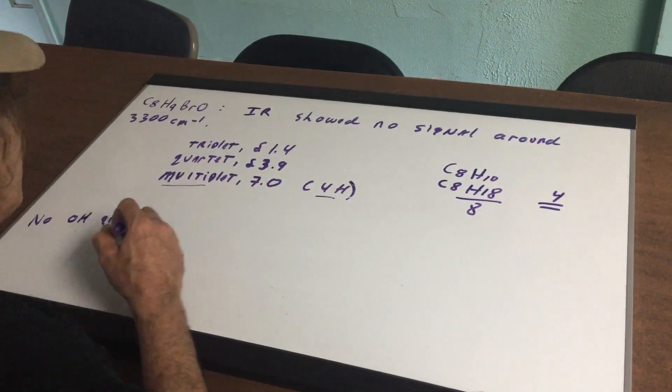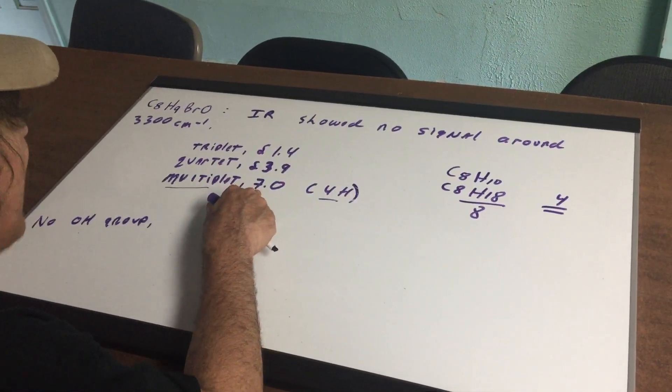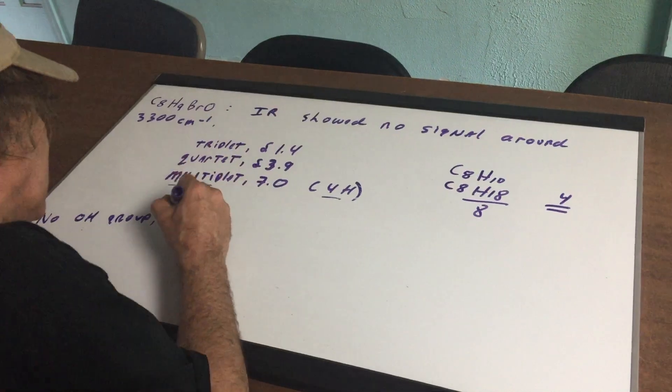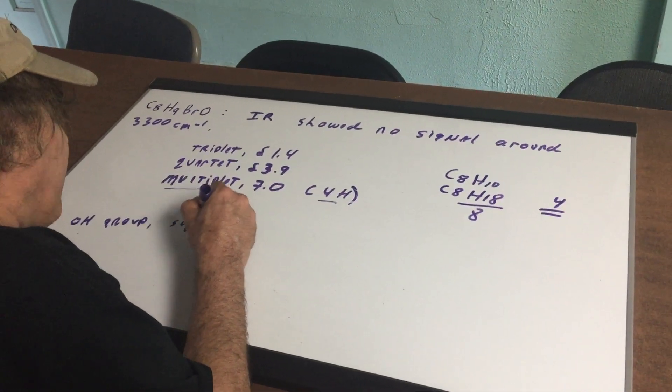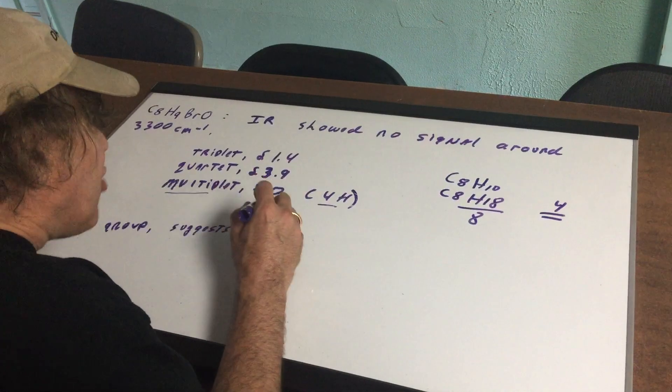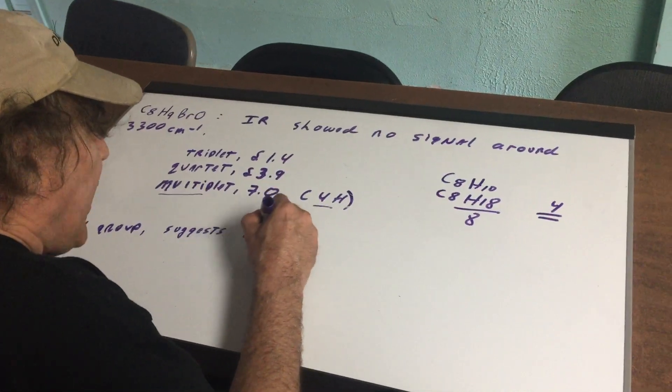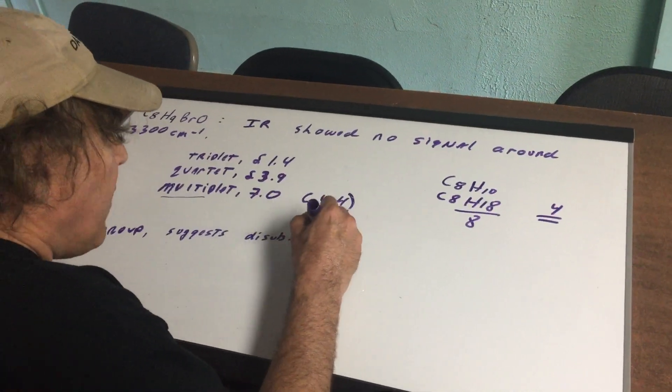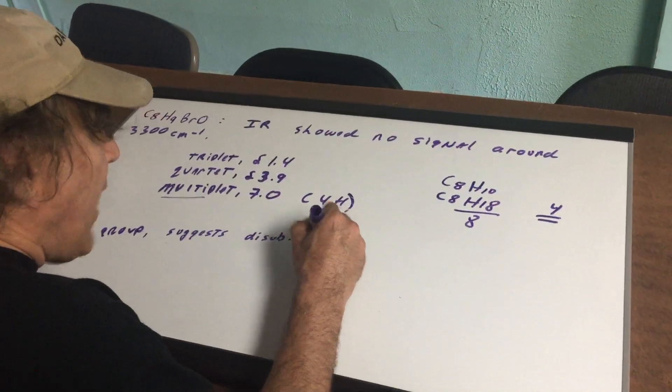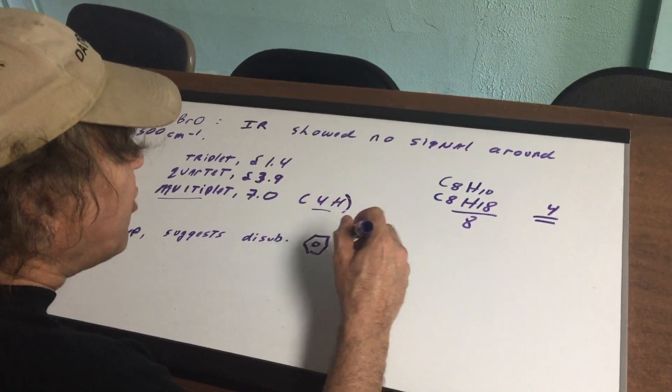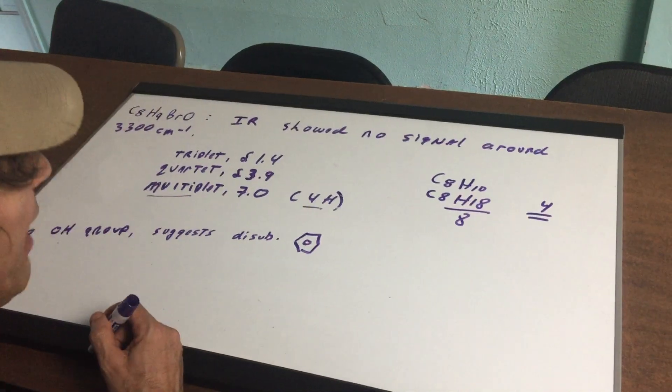The next thing that catches my eye is the signal at seven and it says four H's. Anything around seven and four H's suggests a disubstituted benzene ring. Now if it's disubstituted benzene ring, we can have ortho, meta, or para.